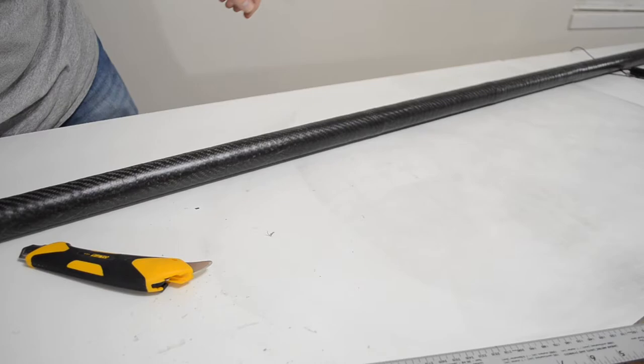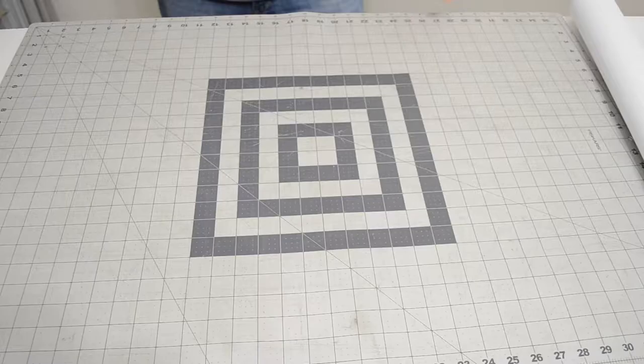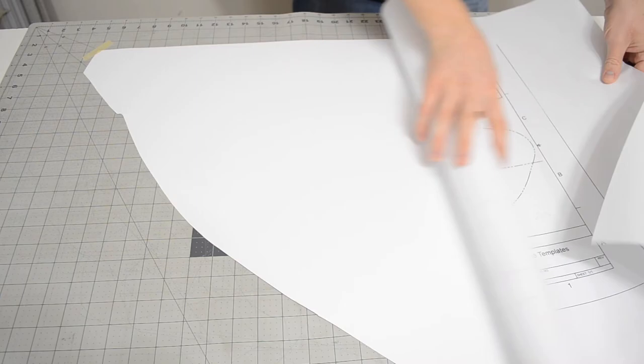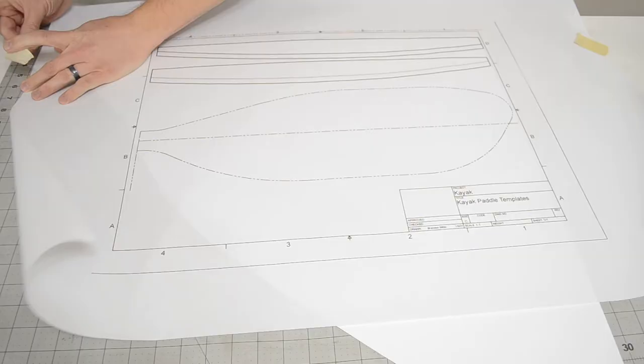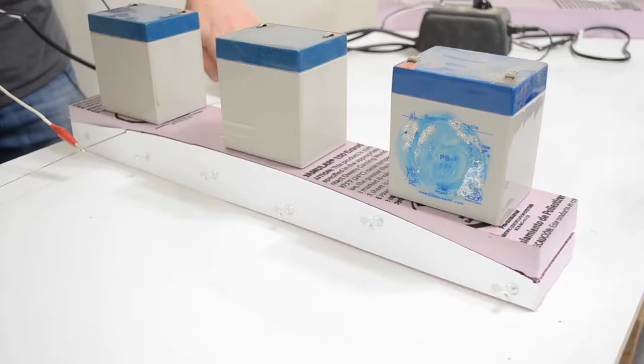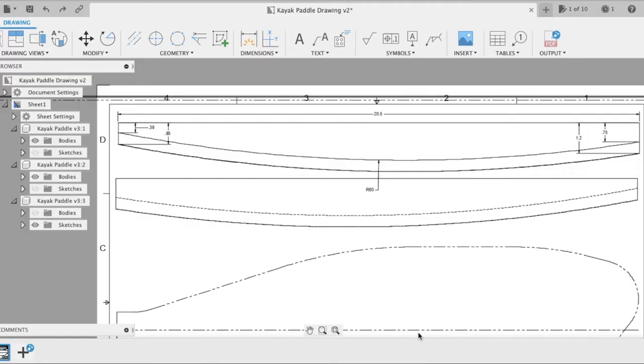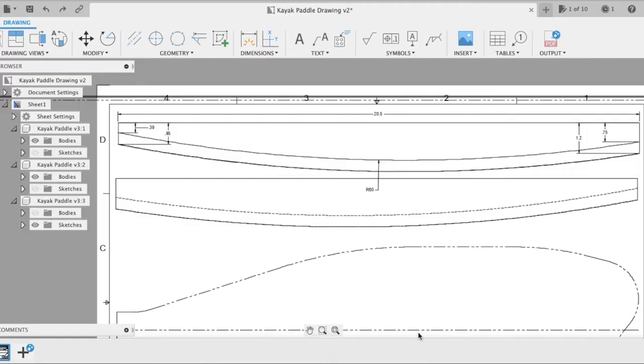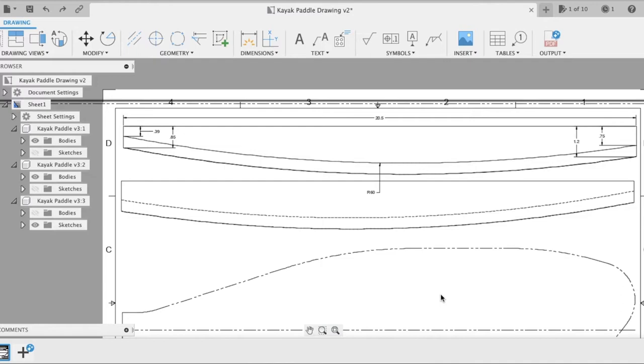Next it was time to make the blades of the paddle. I read on a forum that poster board worked really well for a hotwire template, so I decided to try it, and it worked! I did find though that if you let the hotwire sit in one spot for too long, it will burn a hole into the poster board, so make sure you keep it moving. If you want to build one of these at home, the template is really simple. All it is is an arc with a 60 inch radius.